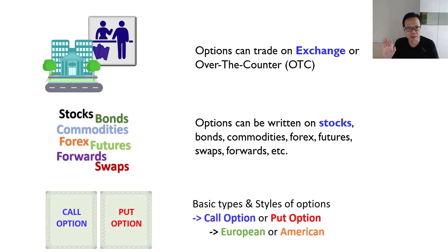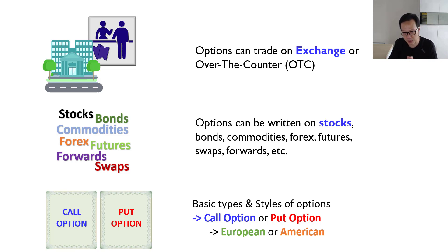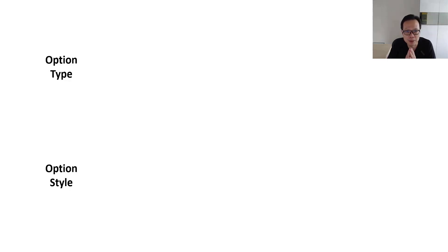Options can be classified into different types and styles. At the most fundamental level, options can be classified into call options and put options — there are two types of options. Within each option, they can be further segregated by style: whether it's an American style option or a European style option. Don't get the wrong idea — the styles have nothing to do with fashion.